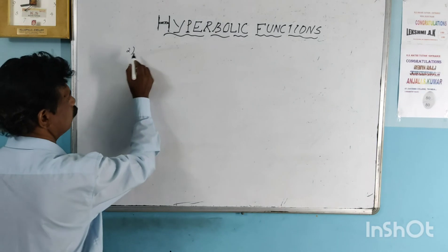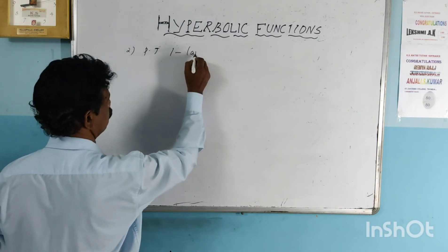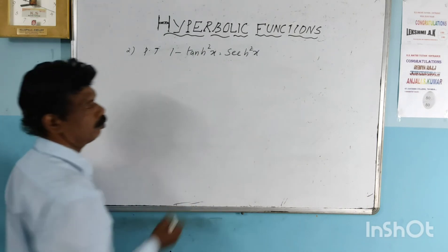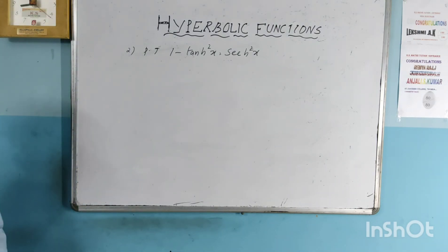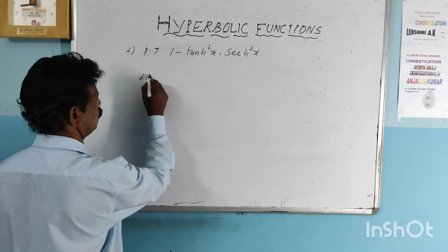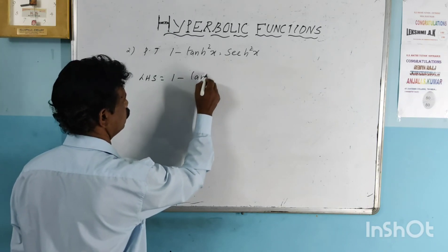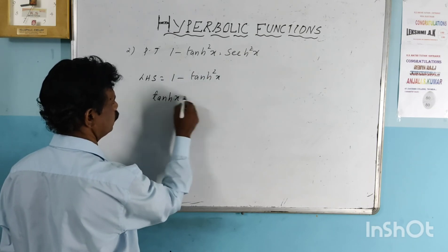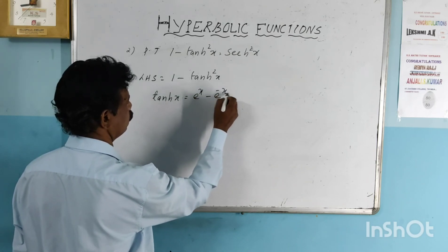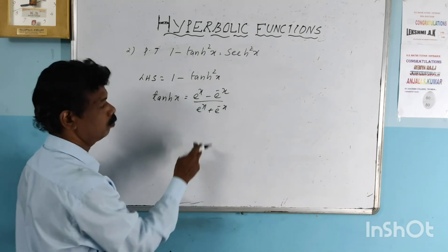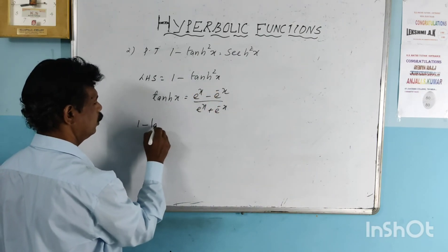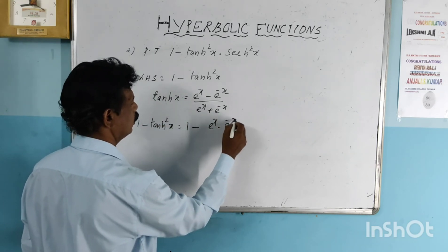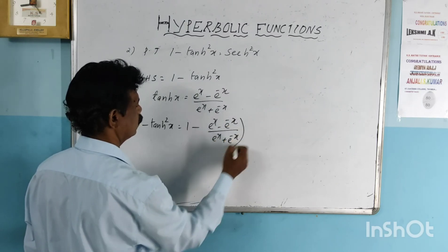Now the second question: prove that 1 minus tanh squared x equals sech squared x. Take the LHS, which is 1 minus tanh squared x. The value of tanh(x) is e raised to x minus e raised to minus x divided by e raised to x plus e raised to minus x. Substituting: 1 minus tanh squared x equals 1 minus the quantity e raised to x minus e raised to minus x over e raised to x plus e raised to minus x, the whole squared.